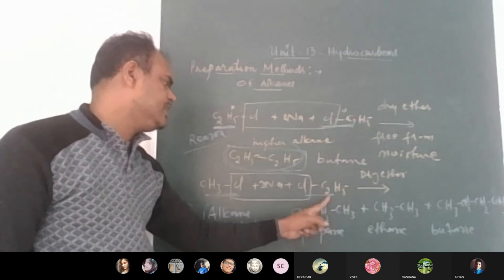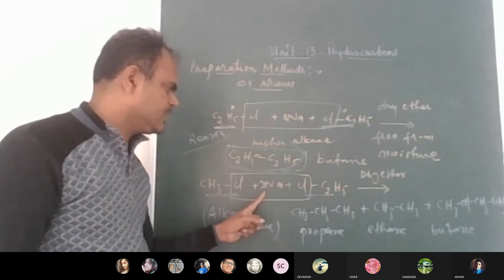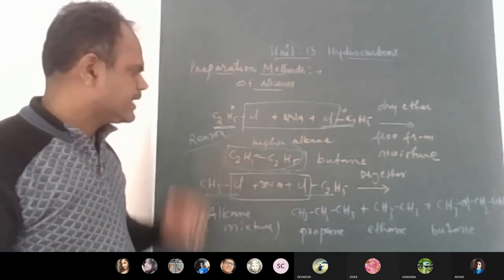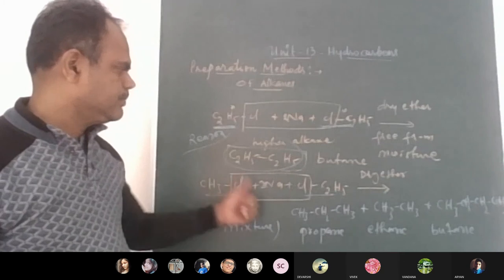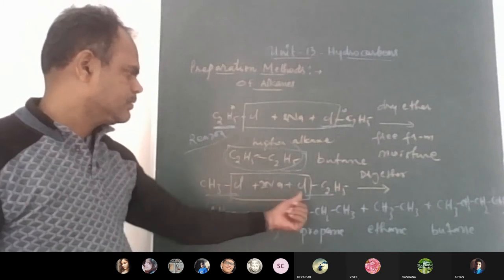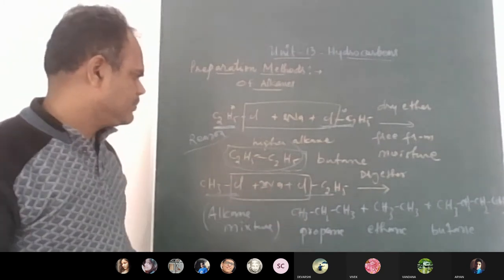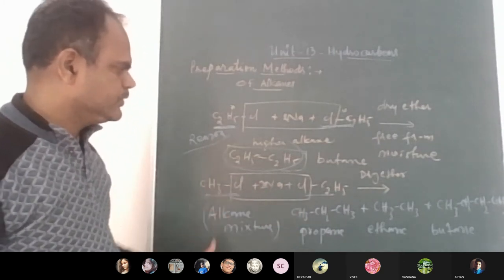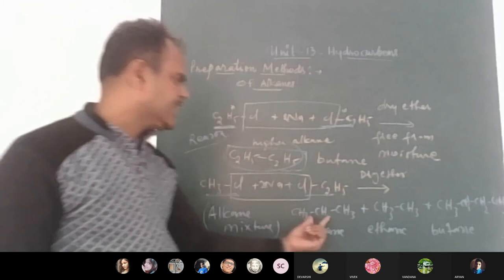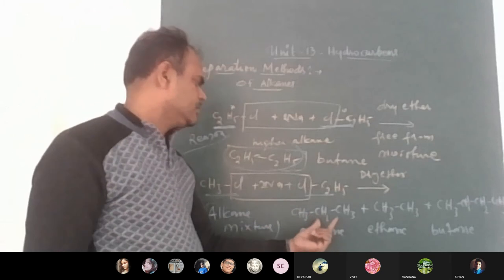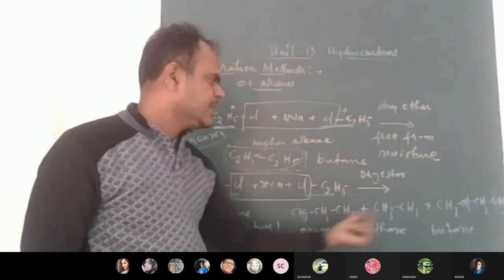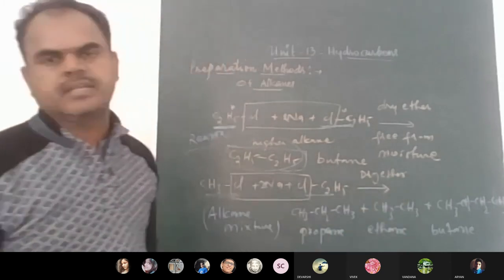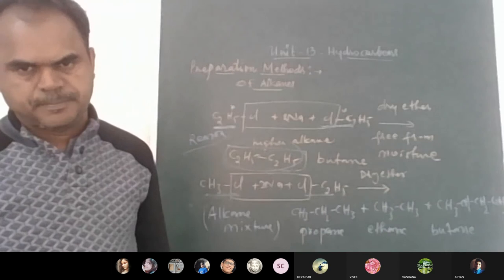This decarboxylation process is used in organic synthesis for decreasing the number of carbon atoms. If you want to prepare propane, you should take sodium butanoate. The decarboxylation method is very useful in convergence reactions.